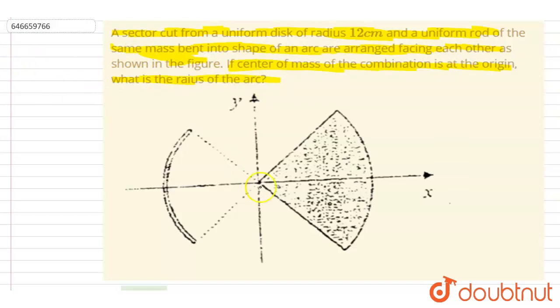The center of mass of the combination is at the origin. What is the radius of the arc? So if you see, this is the diagram and it is said here that the center of mass of the system is lying at the center of this origin. So if you see here, this is a part of the ring.